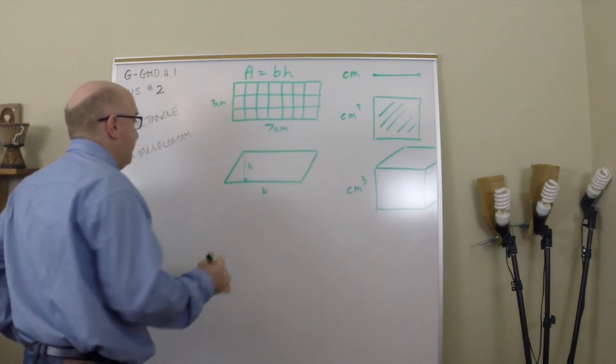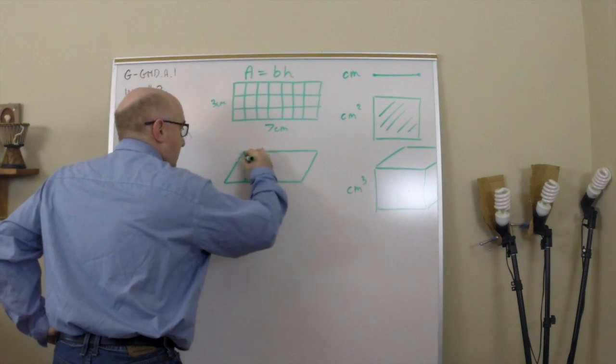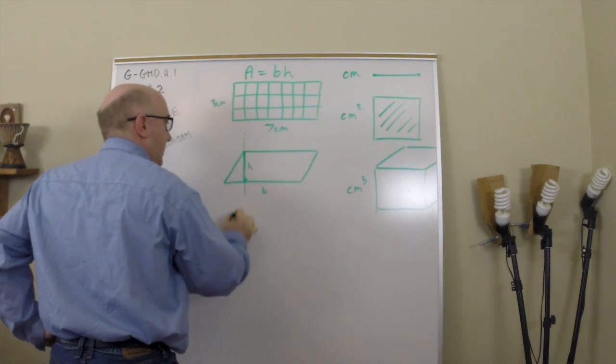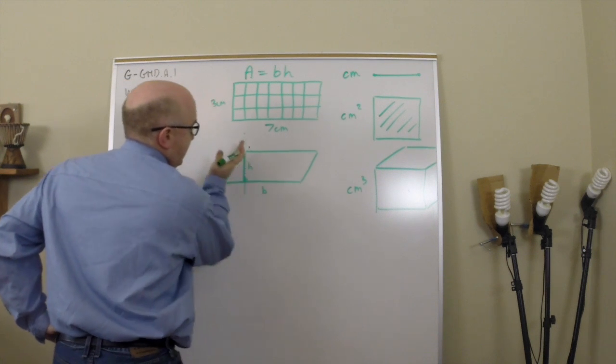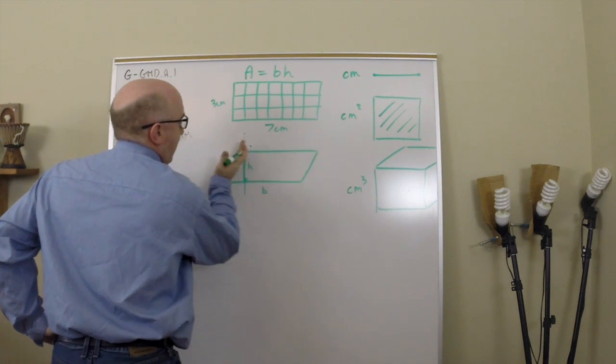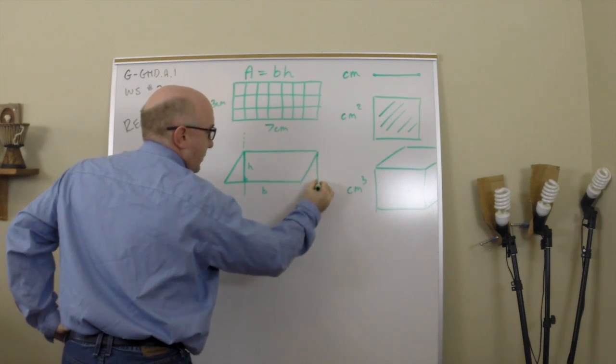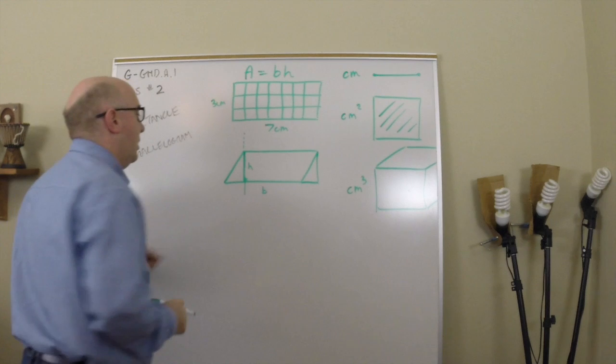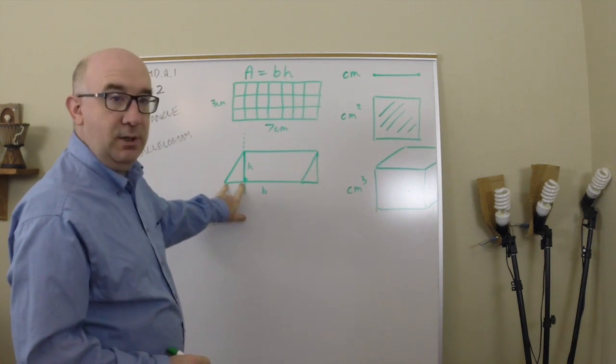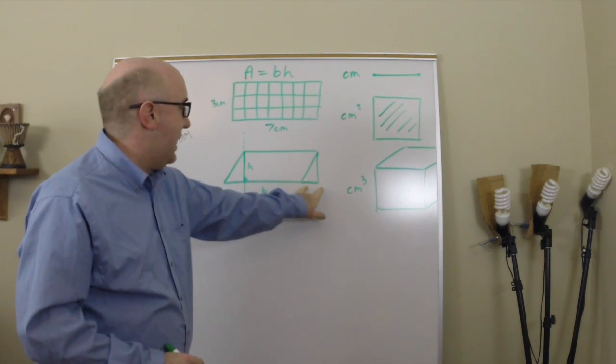So if we took our guy here and we cut it like with our scissors right here, you know that because parallelograms have parallel sides and equidistances and so on, that it would fit right there. And so this piece that we would lose, we would gain back here.